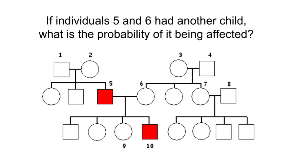Hello, and welcome to Nikolai's Genetics Lessons. Here's a question: if individuals five and six had another child, what is the probability of being affected? Here's couple number five and six, and here are their children. What is the probability that their next child would be affected just like this child? In order to solve this problem, first we have to find the mode of inheritance of this genetic disorder, and then we can do our calculations.